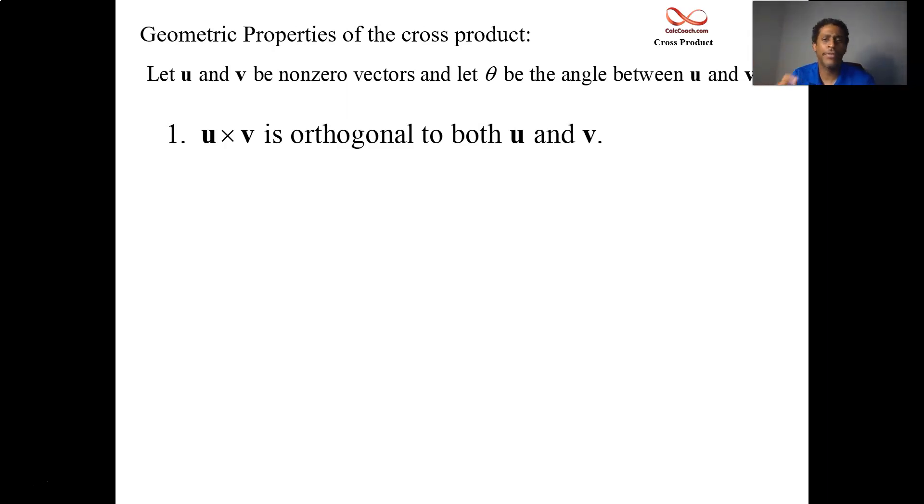But actually, the cross product is connected to the angle between them, just like the dot product was. The formula that connects cross product to the angle is different than the formula that connects the dot product to the angle. So on the left-hand side here, we have the magnitude of the cross product, how long the cross product vector is, is tied to the angle between the vectors, equal to the product of the two vectors times the sine of the angle between them. That's an important property there. We're going to use that property to help us with some of the other properties on this slide.